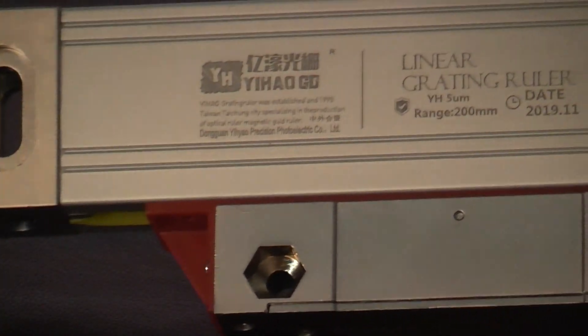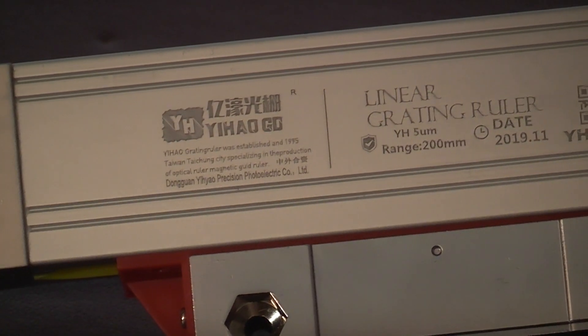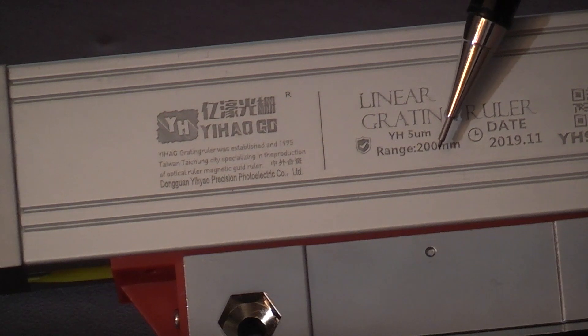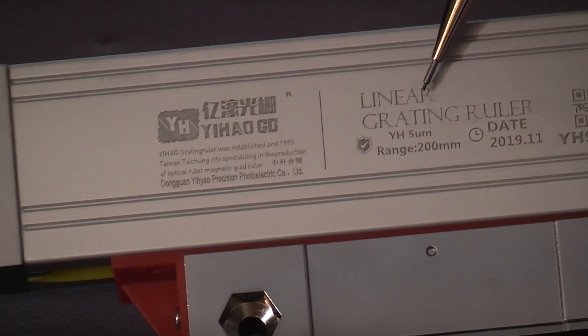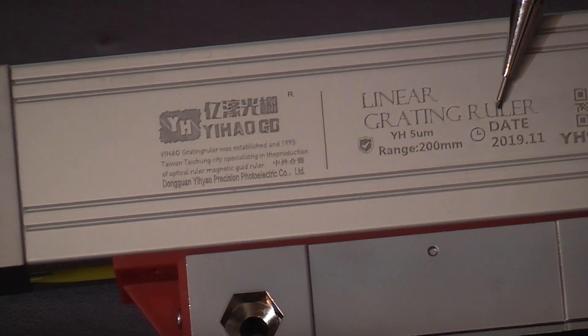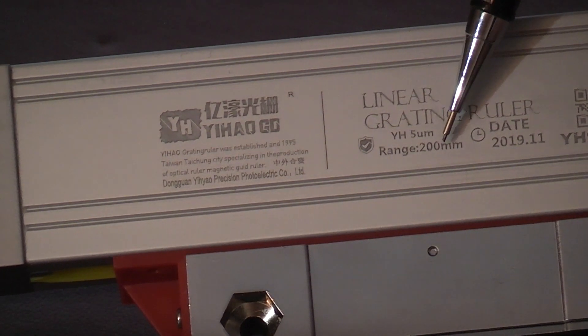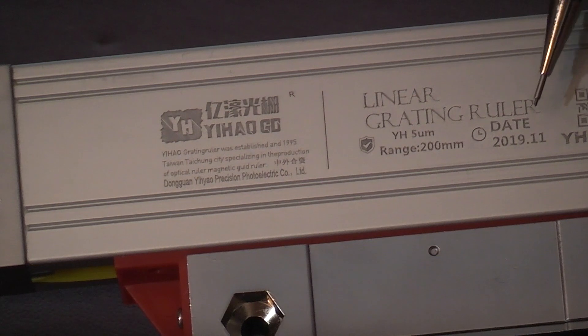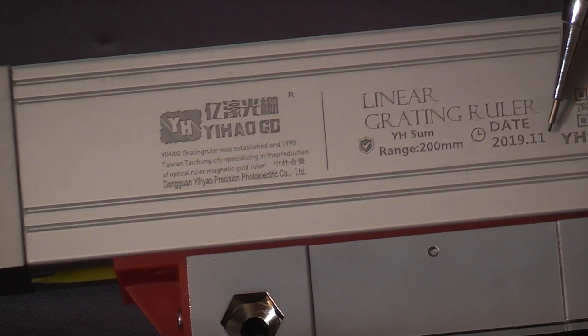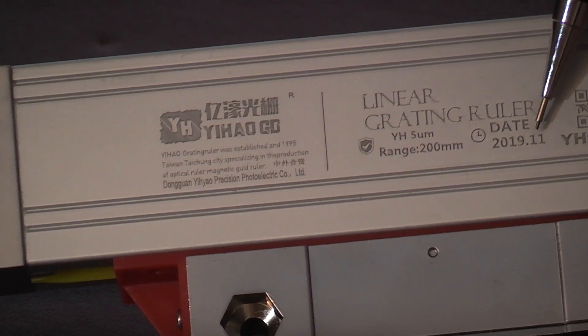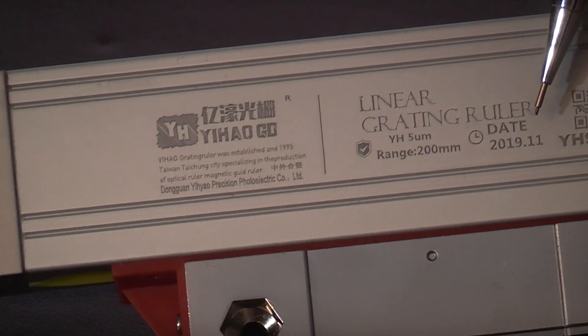On the side of the scale, some more information. It has the range, this is a 200 linear scale, they call it a ruler, so it can go up to 200 millimeter. It has the date it was produced which was November 2019, so you can see it's new stock, had not been sitting on the shelf for years, and it has some more information here about the company.